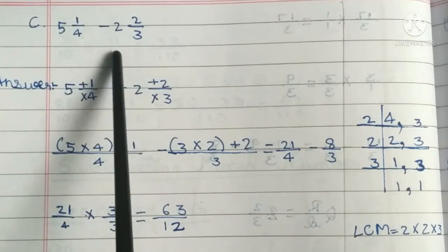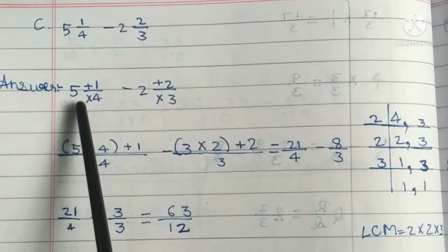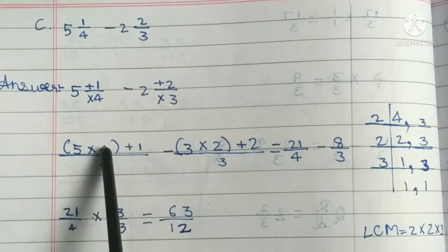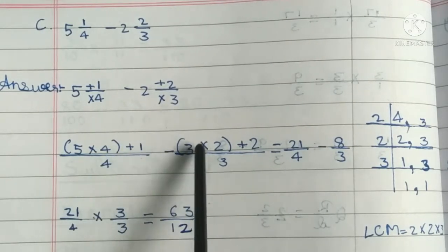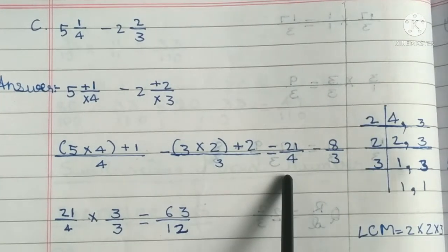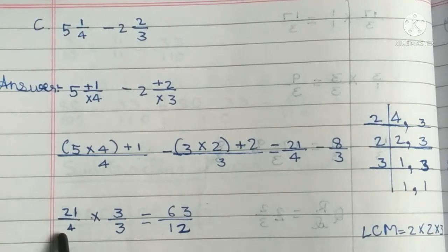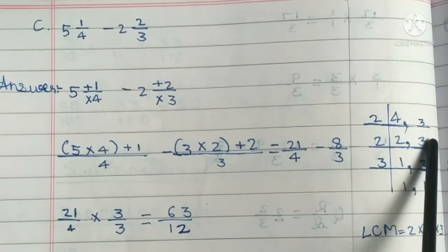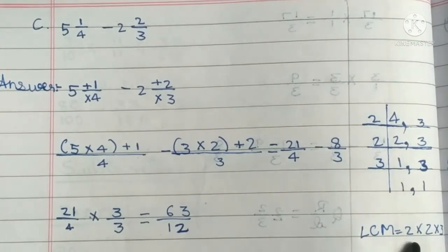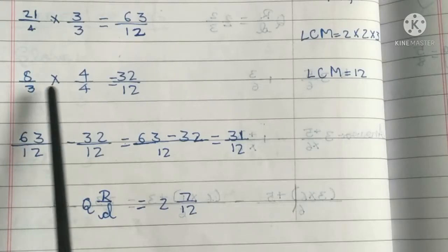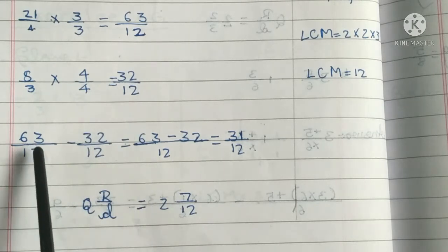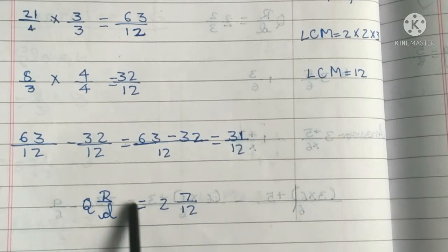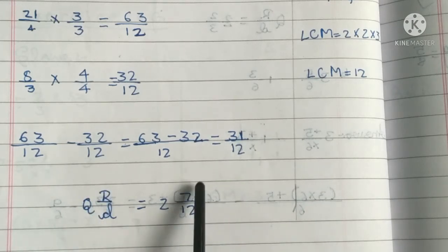Third one: 5 1/4 minus 2 2/3. Answer: Converting mixed numbers — 5 into 4 plus 1 divided by 4, minus 3 into 2 plus 2 divided by 3. That is 21/4 minus 8/3. Finding LCM of denominators 4 and 3, we get LCM is 12. 21/4 multiplied by 3/3 is 63/12. 8/3 multiplied by 4/4 is 32/12. Therefore, 63/12 minus 32/12 is equal to 31/12. With the mixed fraction, Q remainder by D is equal to 2 and 7/12.